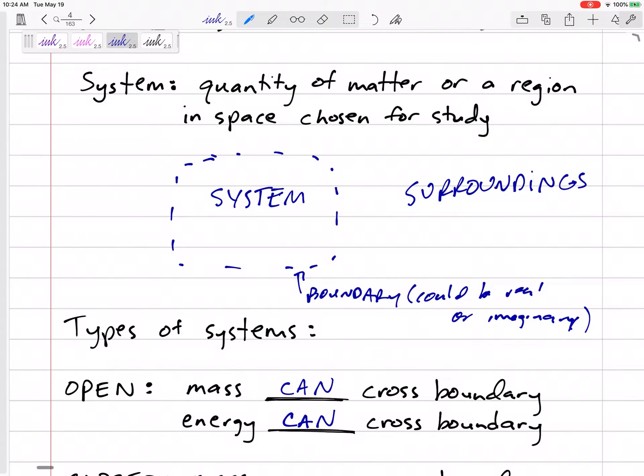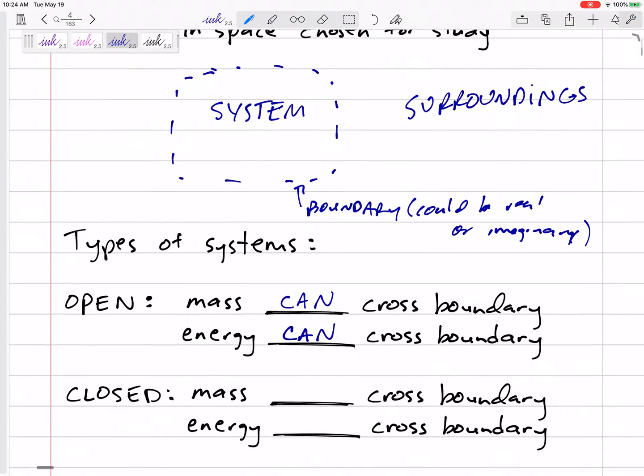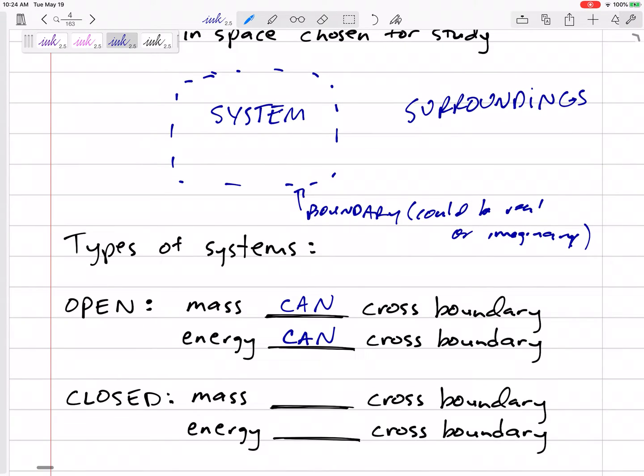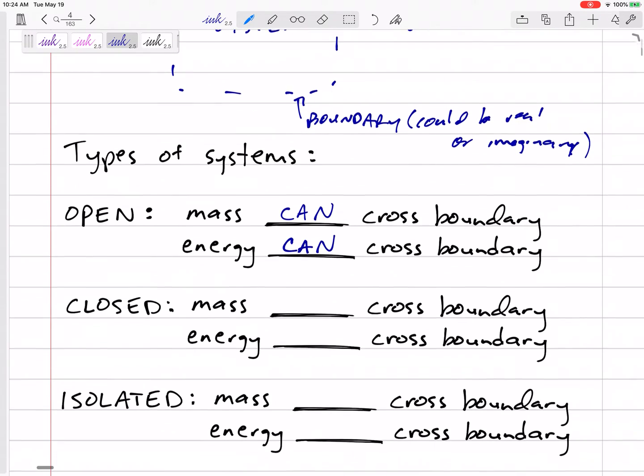So I've just got to say this imaginary dotted line is my boundary. For open systems, everything can cross the boundary - mass can cross the boundary and energy can cross the boundary.